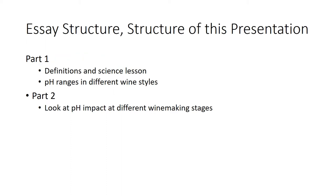Thinking about structures for this essay and this presentation: for this style, doing a chronological structure is helpful. When we go into part two looking at the pH impact at different winemaking stages, we'll go chronologically. The structure of this presentation is two parts: one is the definition and science lesson portion, and then we'll talk about pH ranges in different wine styles, because that was mentioned in the examiner's feedback. Onward!